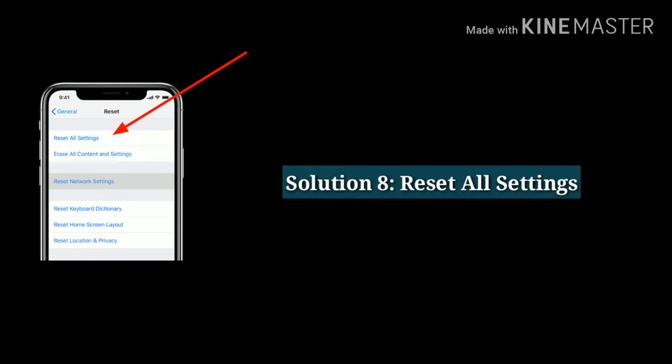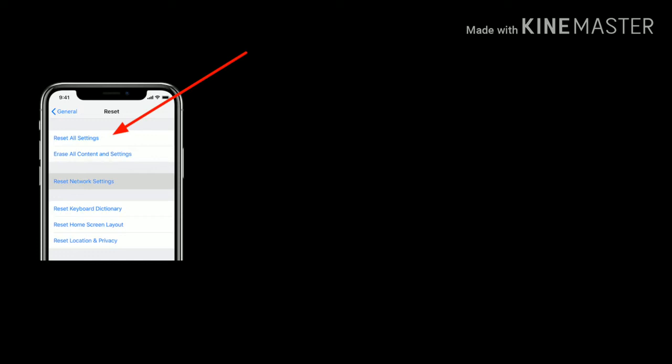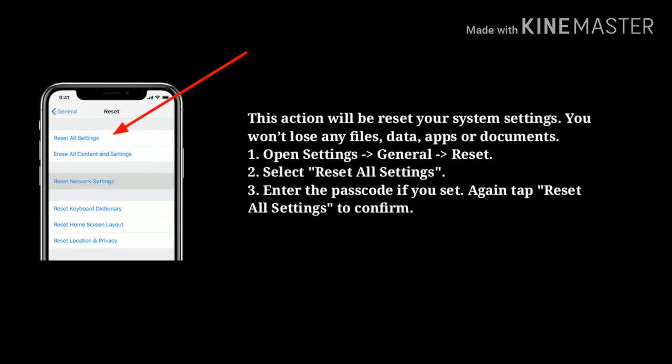Solution 8: Reset all settings. This action will reset your system settings. You won't lose any files, data, apps, or documents. First open Settings, then tap on General, next tap on Reset. Now select Reset All Settings. Next enter the passcode if you have one set. Again tap Reset All Settings to confirm.